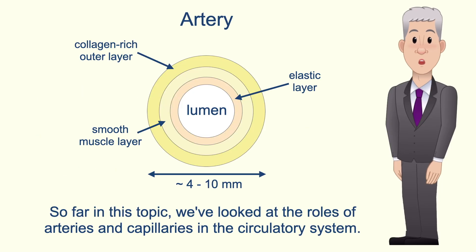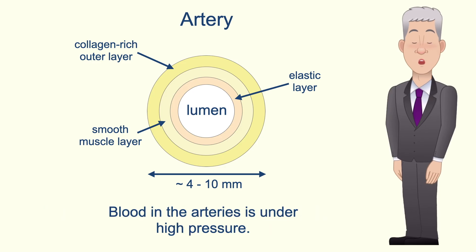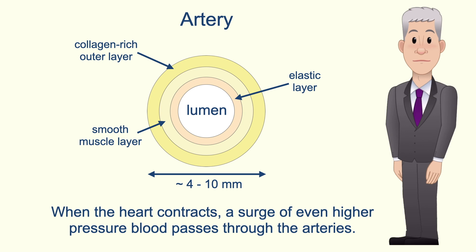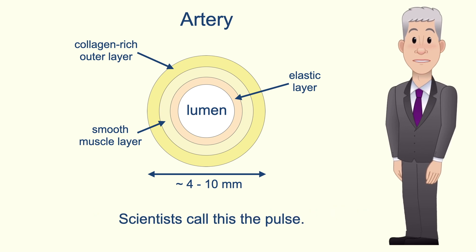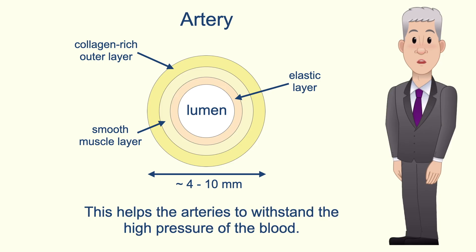So far on this topic we've looked at the roles of arteries and capillaries in the circulatory system. Remember that arteries carry oxygenated blood from the heart to the body tissues. Blood in the arteries is under high pressure. When the heart contracts a surge of even higher pressure blood passes through the arteries — scientists call this the pulse. The walls of arteries are thick and contain a large amount of collagen and this helps the arteries to withstand the high pressure of the blood.